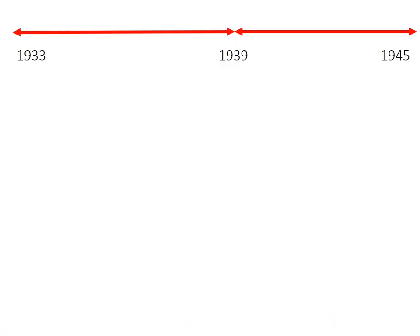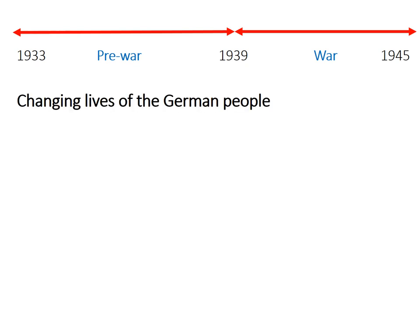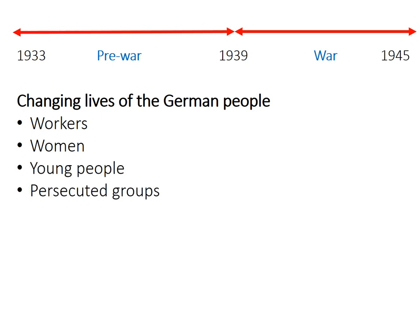Let's go back to our timeline. You can split the Nazi era into two clearly defined sections: pre-war and war. I want to focus on the pre-war era, and in the next set of videos for unit three I want to focus on the changing lives of the German people between 1933 and 1939. We're going to look at different groups: workers, women, young people, and persecuted groups — in particular the lives of Jewish people. We'll do a video on each of these.